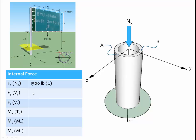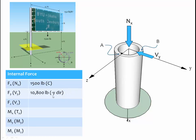Next, let's consider forces in the y-direction. The wind blowing on the sign acts in the negative y-direction, creating a shear on the cross-section. The magnitude of that shear force equals the wind pressure of 150 pounds per square foot multiplied by the area of the sign, which is 12 feet wide by 6 feet tall, giving a shear force in the negative y-direction of 10,800 pounds.